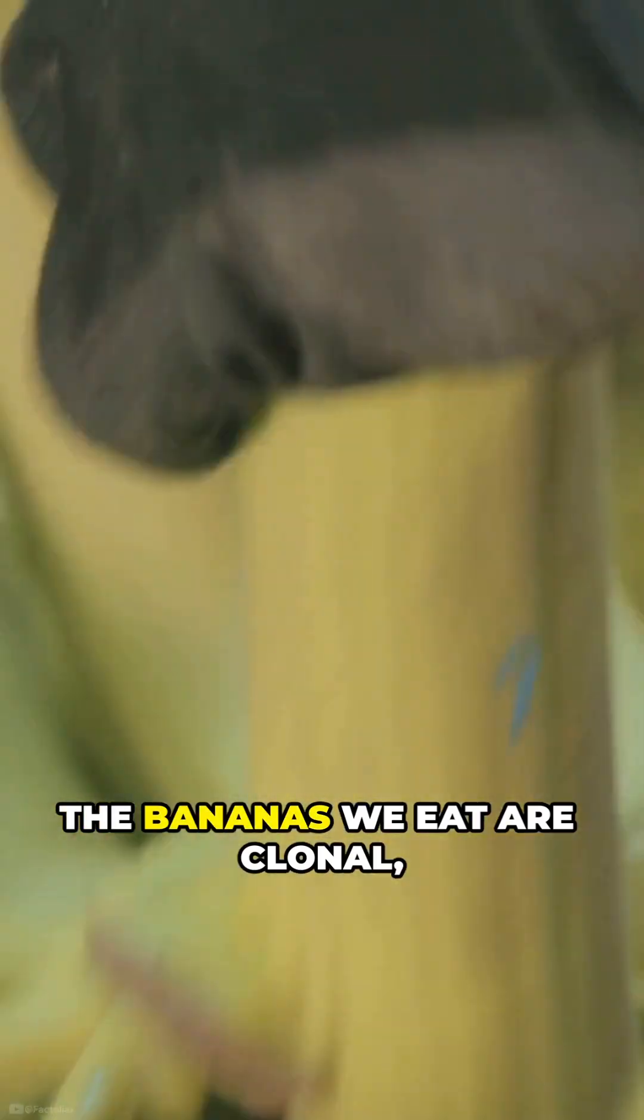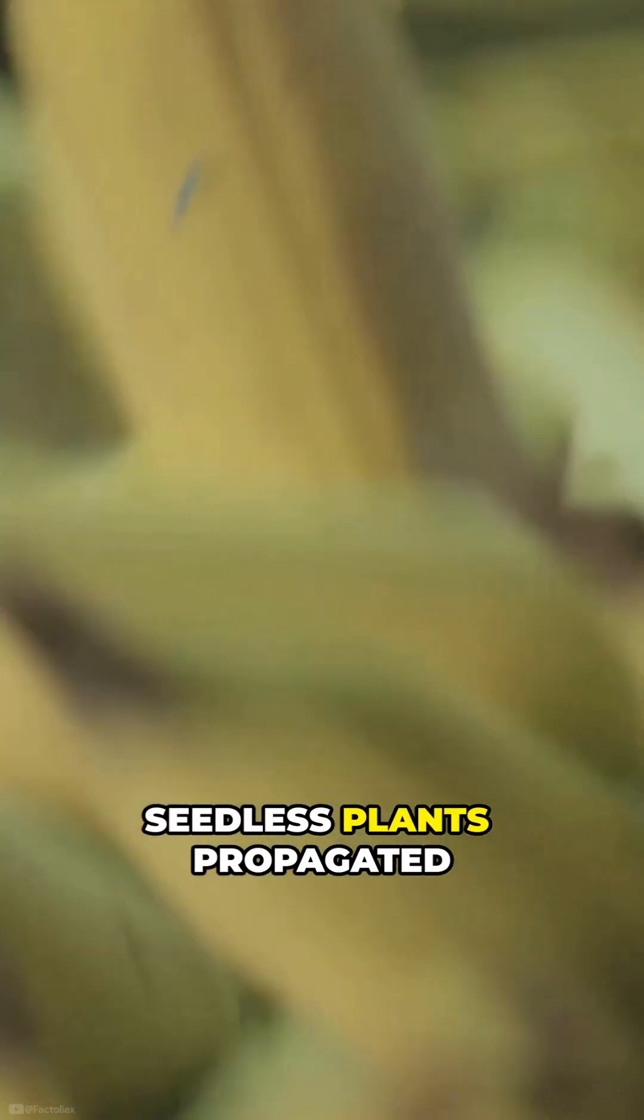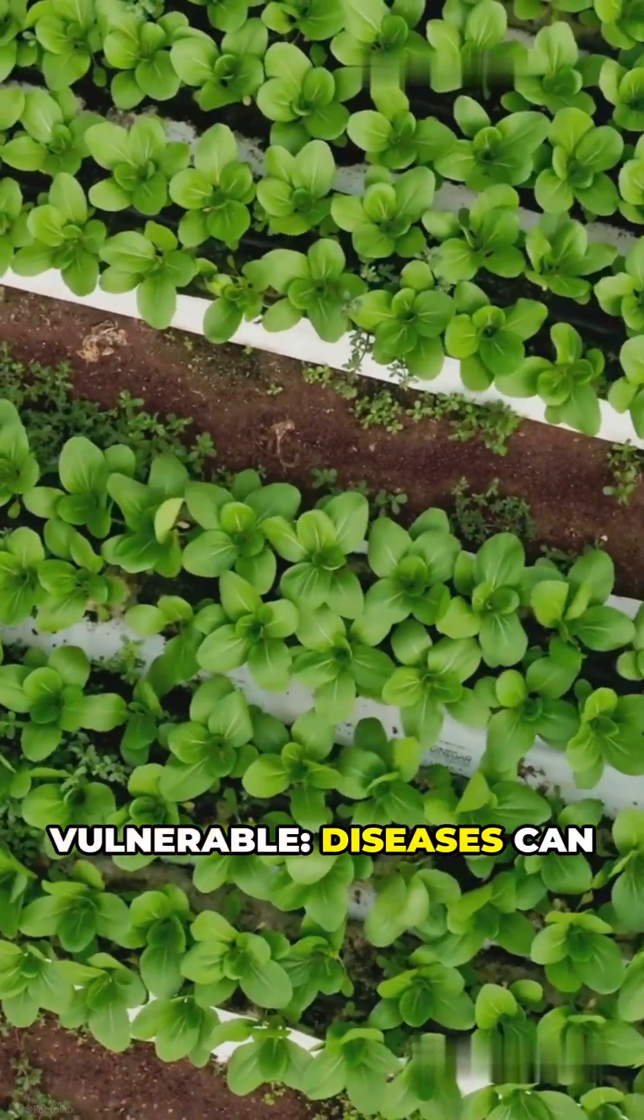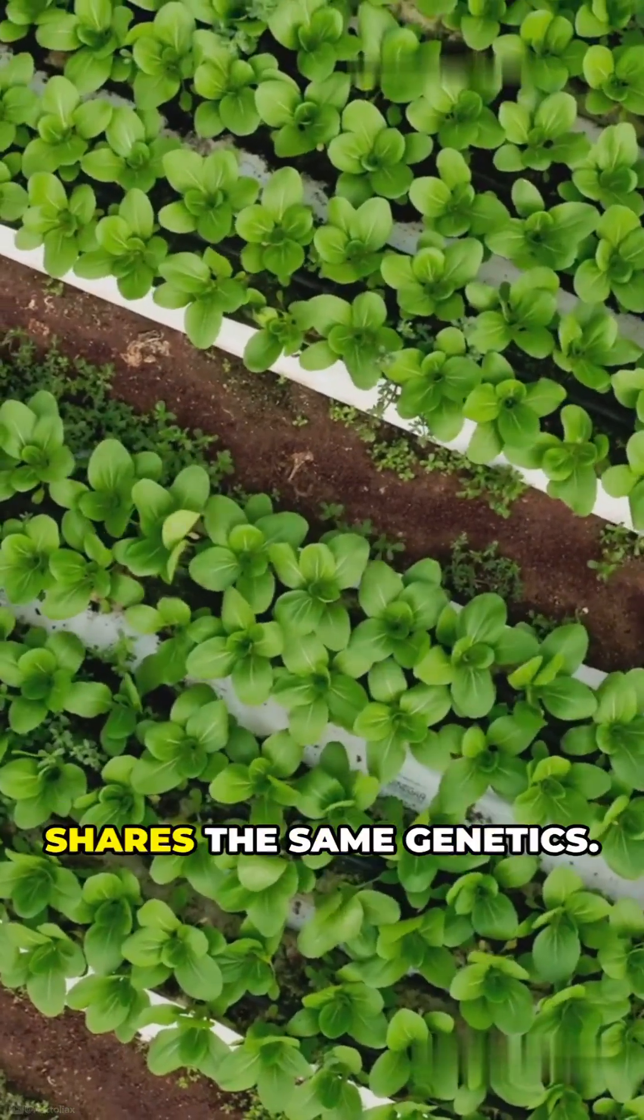Third, bananas. The bananas we eat are clonal, seedless plants propagated from one another. That uniformity makes plantations efficient and vulnerable. Diseases can spread fast when every plant shares the same genetics.